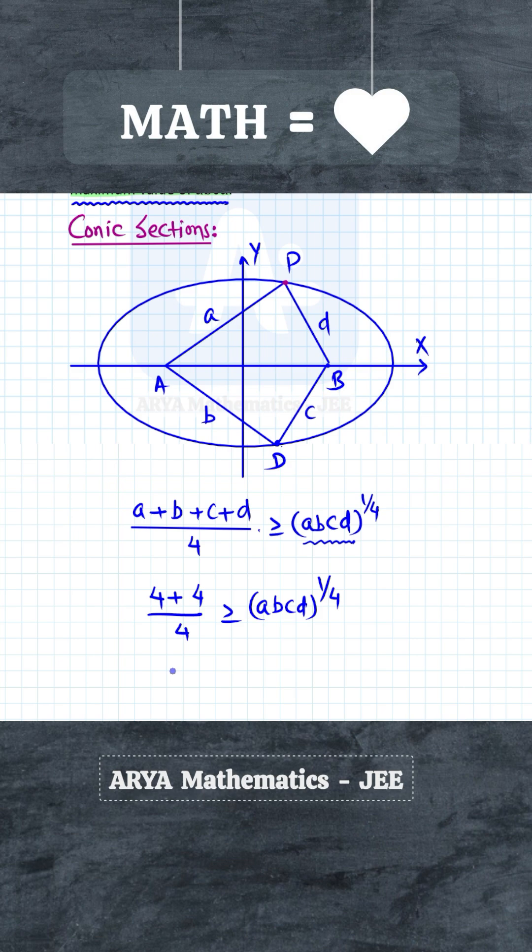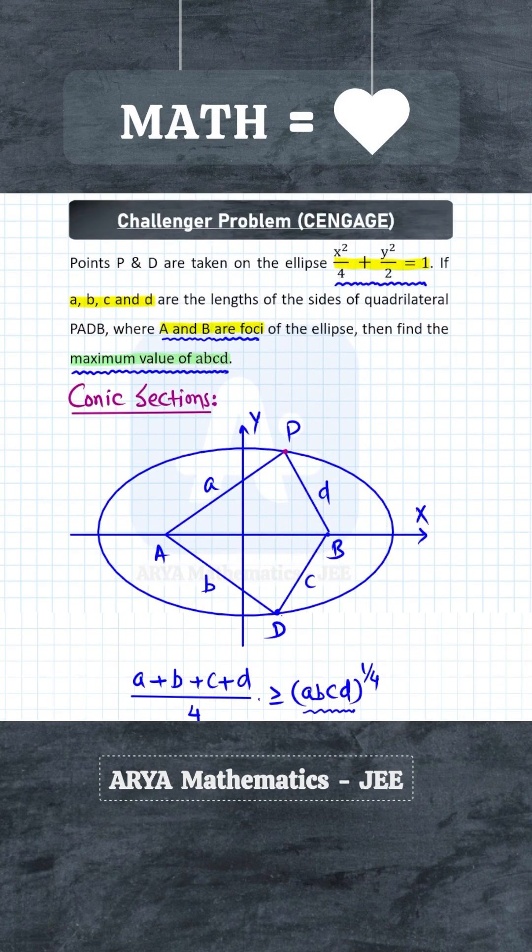And now from here we can say that abcd must be less than or equal to 2^4, which is 16. So therefore, the maximum value of abcd must be 16.